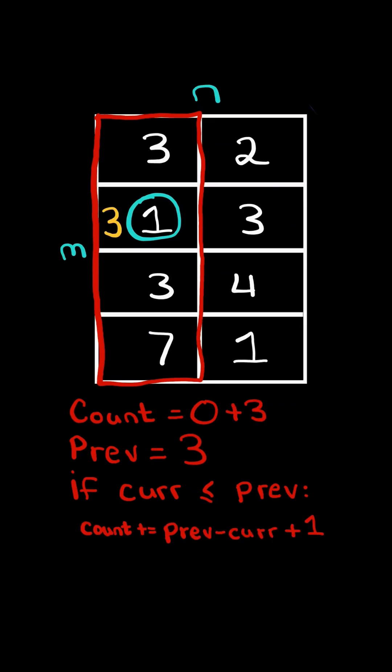If the current element is less than or equal to the previous, then it will take previous minus current plus 1 number of operations. And lastly, we increment previous by 1 and continue.